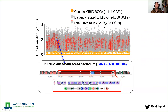Some 3,700 of the GCFs are actually exclusive to metagenome assembled genomes. One of those BGCs — from the Tara Ocean dataset — is an NRP-polyketide hybrid BGC with a pretty complex multimodular structure typical of the well-characterized BGCs you can see in the MIBiG database.